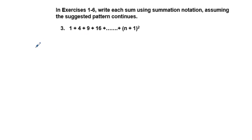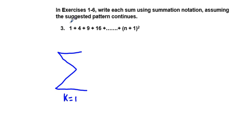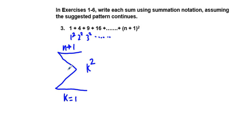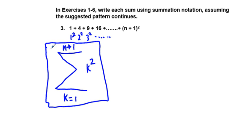Problem number 3 — we're going to use summation notation again. We get our sigma. We're going to start out with k equals 1. The first term would be 1 squared, the second term 2 squared — so we have 1 squared plus 2 squared plus 3 squared and so on, up to n plus 1 squared. We put k squared here, going up to term n plus 1, so it goes up toward infinity.